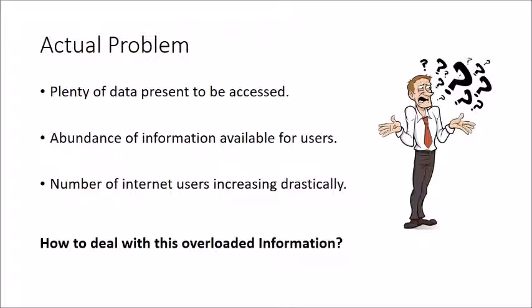Abundance of information available for users and number of internet users increasing drastically. If you talk about Digital India, everybody is having the internet right now. In the rural areas, users are creating their accounts on Facebook, Google, or other social networking websites or other online websites. The users are increasing drastically. There are a lot of information, a lot of data is available. So how is an online user going to handle such information?